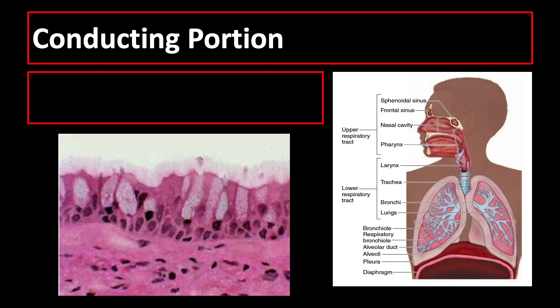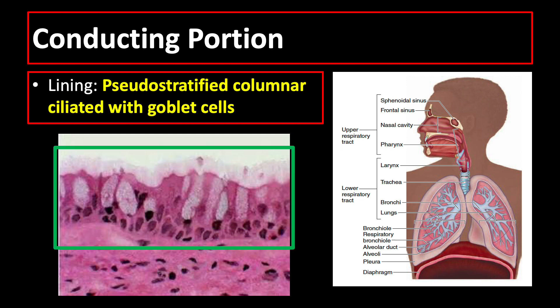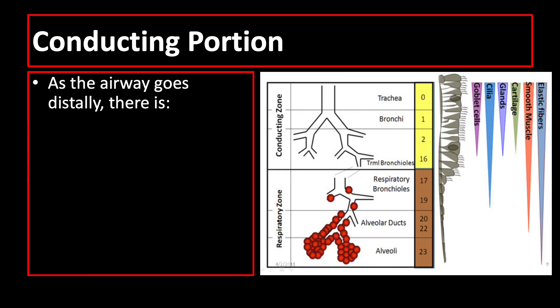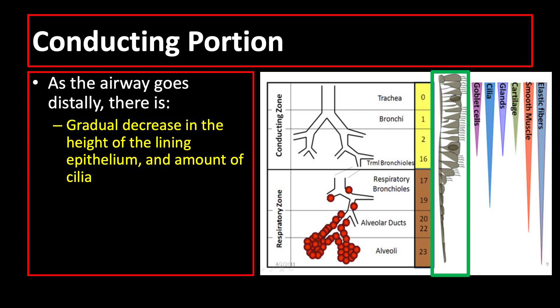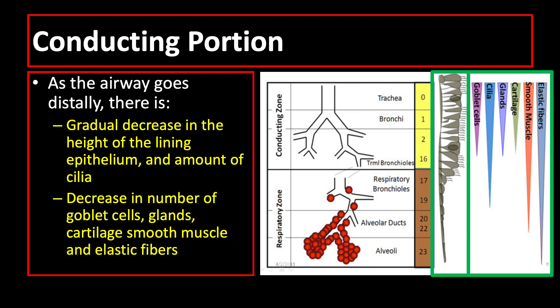Generally, the conducting zone of the respiratory system is lined by pseudostratified columnar ciliated epithelium with goblet cells. In the conducting zone, as the airway goes distally, there is a gradual decrease in the height of the lining epithelium and amount of cilia, and there is a decrease in the number of goblet cells, glands, cartilage, smooth muscle, and elastic fibers.